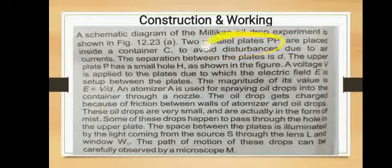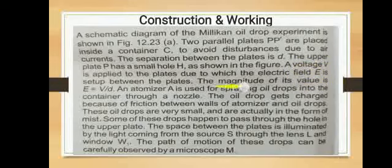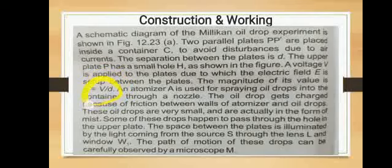A schematic diagram shows two parallel plates P and P-dash — P is positively charged and P-dash is negatively charged — inside a container to avoid disturbance due to air currents. The separation between the plates is D. The upper plate P has a small hole H. A voltage V is applied to the plates, due to which the electric field E is established between the plates, with magnitude E = V/D.